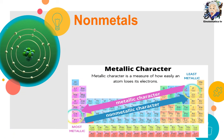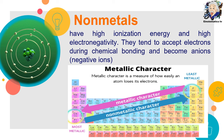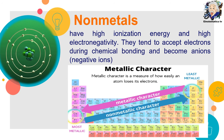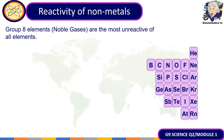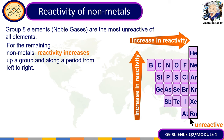Non-metals have high ionization energy and high electronegativity. While metals willingly give their valence electrons, non-metals tend to accept electrons during chemical bonding and become anions, also known as negative ions. The elements in Group 8 — known as noble gases — are the most unreactive because they already have a full outer shell. For remaining non-metals, reactivity increases up a group and along a period from left to right. The most unreactive element is helium.